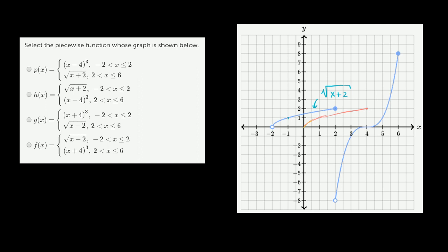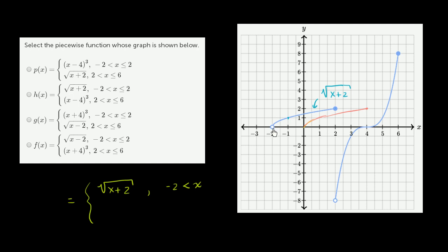So our function — it could be p, h, g, or f — over this first interval looks like the square root of x plus 2, for negative 2 less than x, meaning it's not defined at negative 2, but as long as x is greater than negative 2 and x is less than or equal to 2. That's this part of the function.